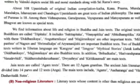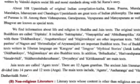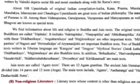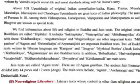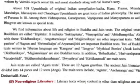About 108 Upanishads of original Indian compilations — Katha, Kena, Prashna, Mundaka, Mandukya, Ishavasya, and Chandogya — are great texts of Indian philosophy. The number of Puranas is 18. Among them, Vishnu Purana, Garuda Purana, Vayu Purana, Matsya Purana, and Bhagavat are known as special texts.